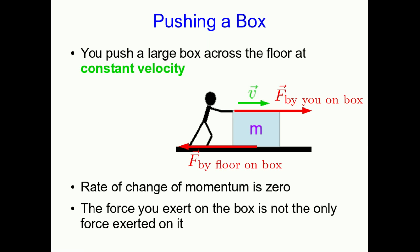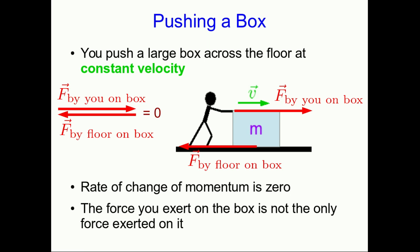The fact that the box is moving at constant velocity tells us that the strength of these two forces — the one you're exerting on the box and the one the floor is exerting on the box — must be equal. So the vector sum of the forces is zero, and that's why the rate of change of momentum is zero.